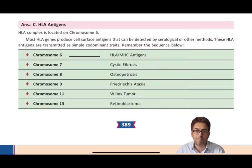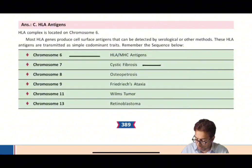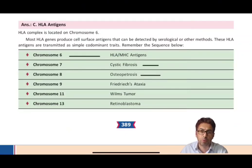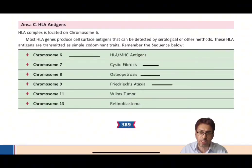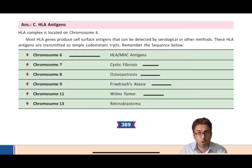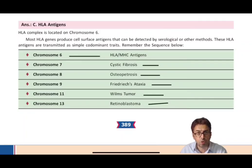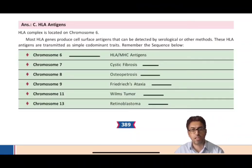Chromosome 7 is linked with cystic fibrosis; chromosome 8 with osteopetrosis, also known as marble bone disease or Albers-Schönberg disease; chromosome 9 with the neurological condition Friedreich's ataxia; chromosome 11 with Wilms tumor — very important; and chromosome 13, unluckily, with retinoblastoma. These are the key chromosome-disease linkages you must remember for pathology and medicine questions.